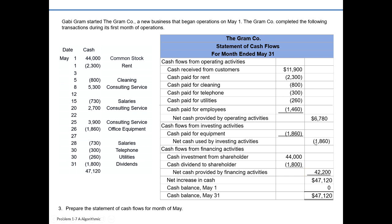Adding up all individual activities: $6,780 inflow from operating, $1,860 outflow from investing, and $42,200 inflow from financing gives a net increase in cash of $47,120. Adding that to our beginning balance of zero — since we just started business — we arrive at an ending cash balance of May 31st of $47,120. This is typical for a new business: quite a bit of cash received came from shareholders, while operating was fairly limited but still positive, with larger amounts expected in the future as they gain more clientele.